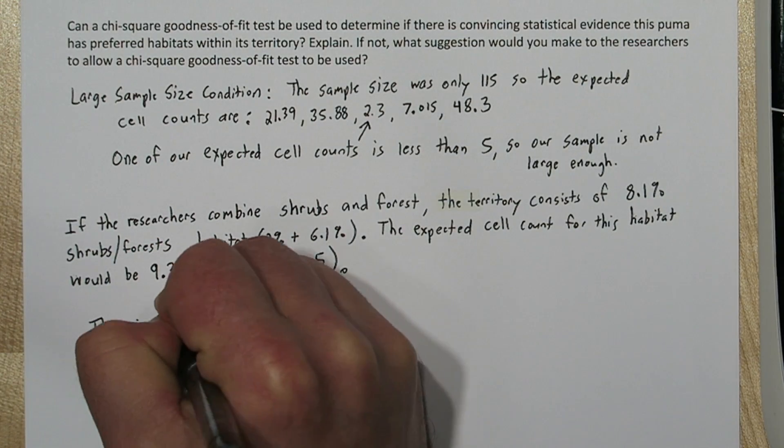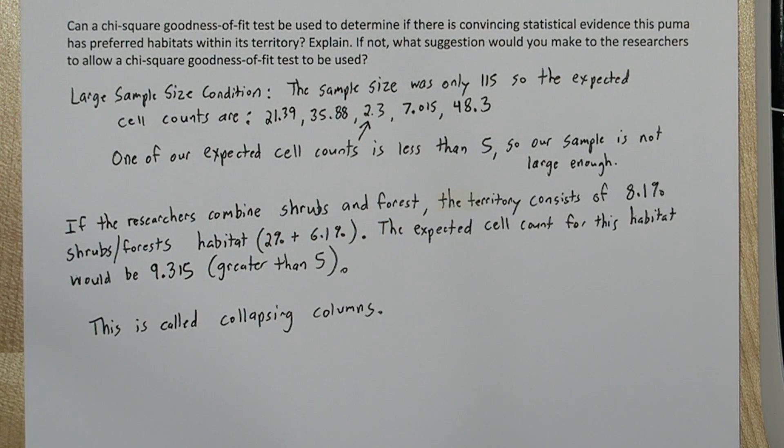So this is called collapsing columns, and it's a great way to deal with the large sample size condition.